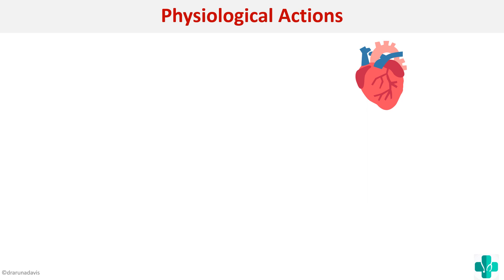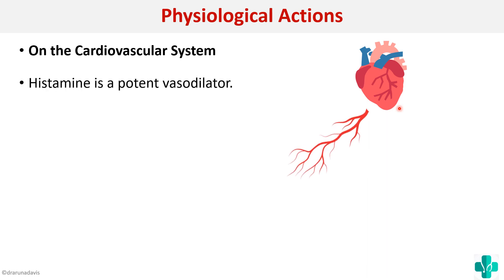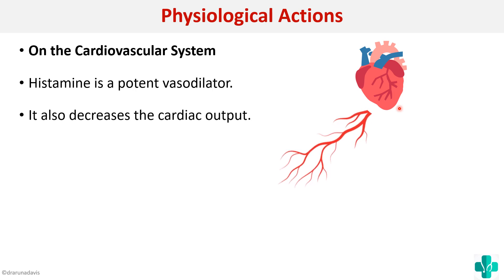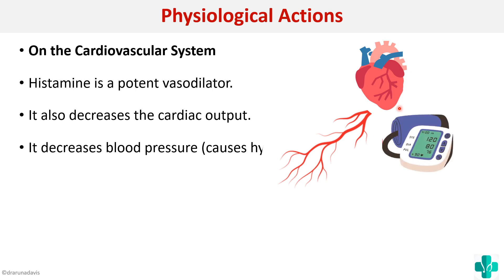Next, we'll see the physiological actions of histamine, starting with the cardiovascular system. To remember this, think of a patient who has gone into anaphylactic shock due to allergy, which is caused by histamine. On the cardiovascular system, histamine is a potent vasodilator, it decreases cardiac output, and decreases blood pressure, causing hypotension.